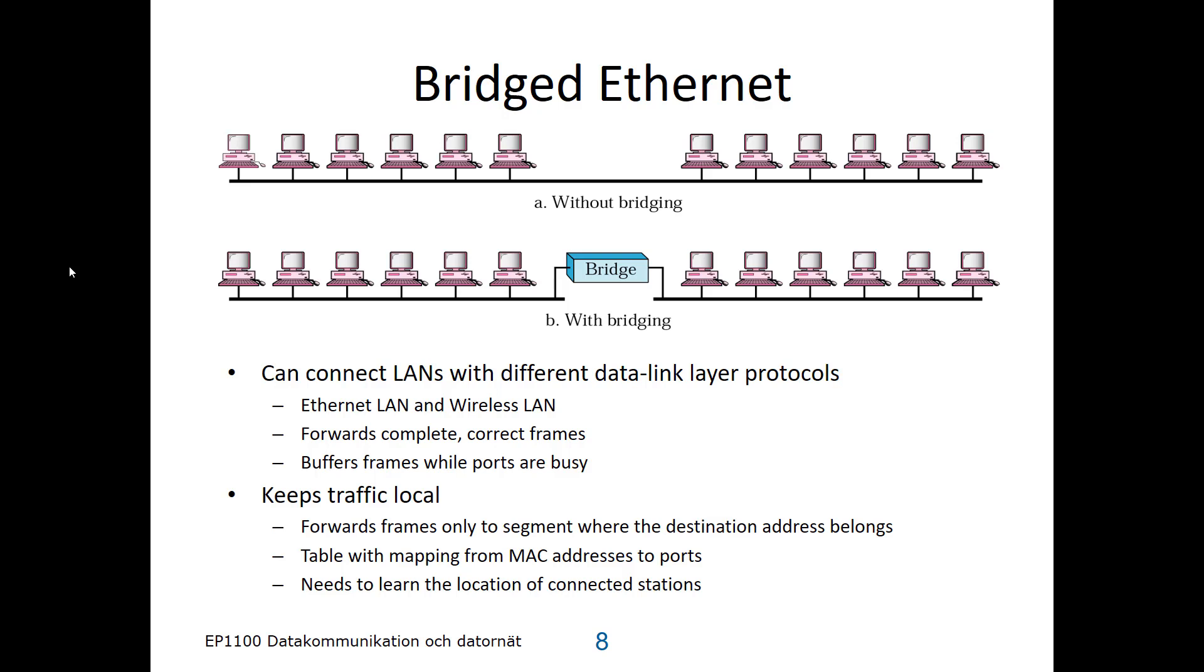So it only forwards frames to the segment where the destination address belongs. And it needs a table for that, mapping MAC address to ports, ports being the inputs and outputs on the bridge. And this, it needs to learn from the connected stations. So let's look at how that can be done.